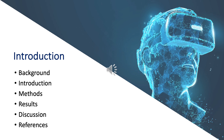Today I'm going to discuss some background research, including the applications of VR and the use of VR for anxiety and distraction. I'll introduce the study, including the aims and hypotheses. I'll then lead on to methods, including the participants, measures and procedure. I'll briefly discuss the results and explain what the findings mean. Following this, I'll discuss the conclusion, including strengths and limitations, implications and future research.